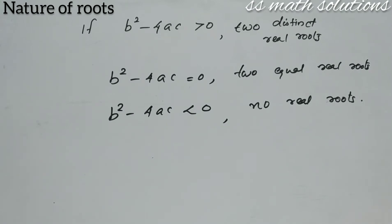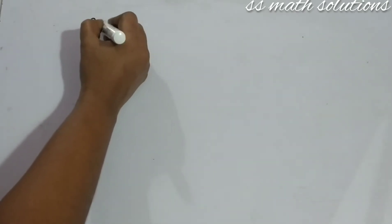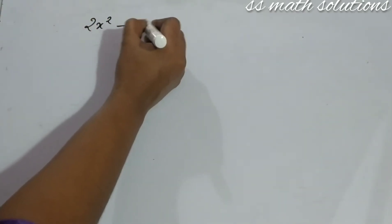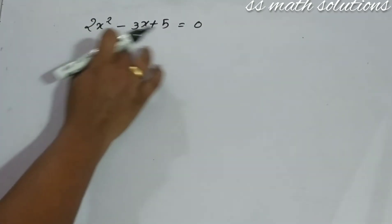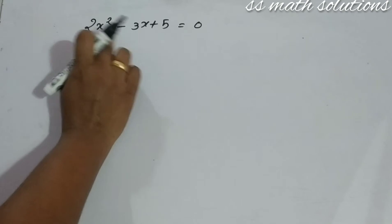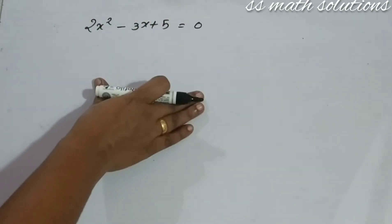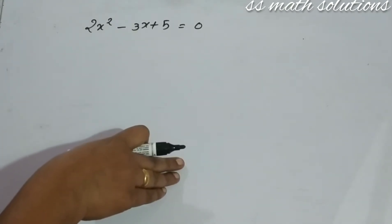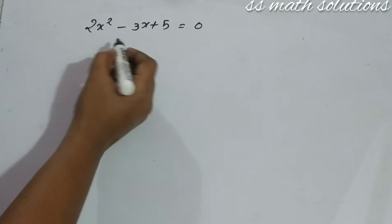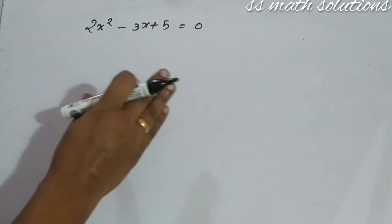Let's try with some examples so you can understand very well. We can check with one example: 2X squared minus 3X plus 5 equals zero. This is a quadratic equation of the form AX squared plus BX plus C equals zero. To check the nature of roots, we need the discriminant B squared minus 4AC only.